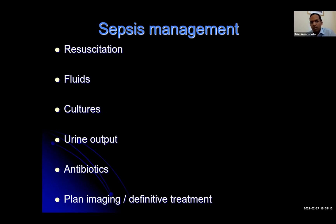What I mean by the golden hour is aggressive resuscitation — make sure the patient has fluids, that cultures have been sent early because they'll guide future management when results come back in 24 to 48 hours. You need a measure of urine output, and catheterising patients early is good because it helps you accurately monitor output, guide fluid resuscitation, and also drains the urine from the urinary tract. Antibiotics are very important at this stage, followed by imaging and definitive treatment planning. Before thinking about urological interventions such as drains or nephrectomy, all these basic steps are critical — don't forget them.